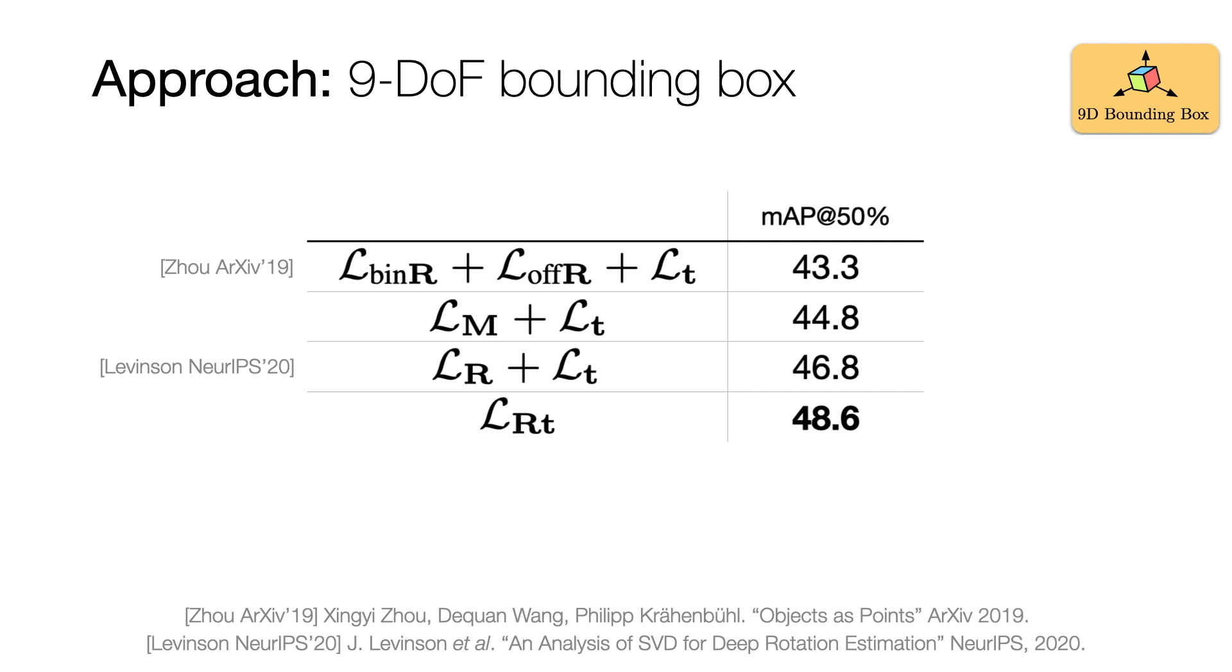We also analyze different loss functions for estimating 3D bounding boxes. In particular, we compare commonly used approaches that independently supervise the rotation and translation. For the rotation matrix, we compare binning strategies combined with offset regression, and direct matrix regression with and without enforcing orthogonality.